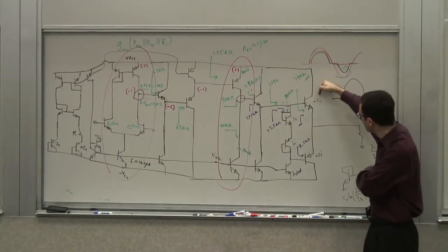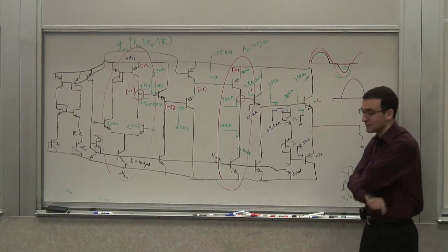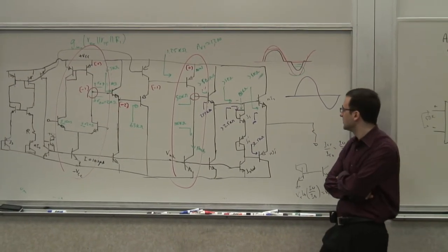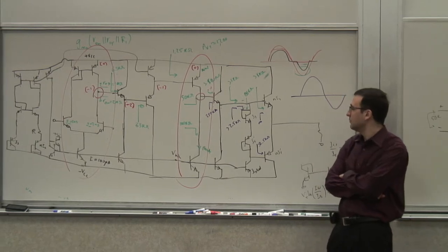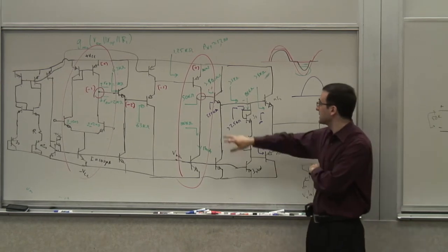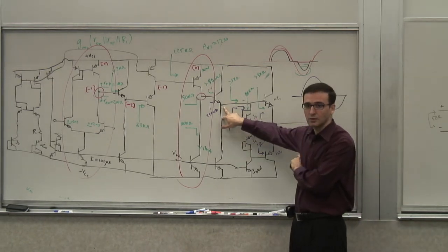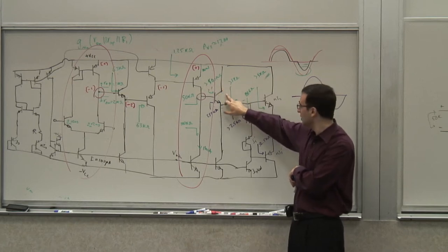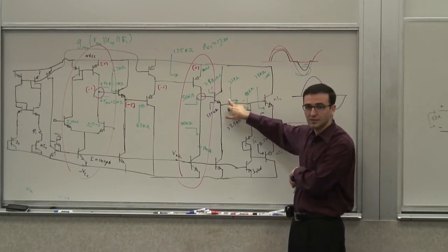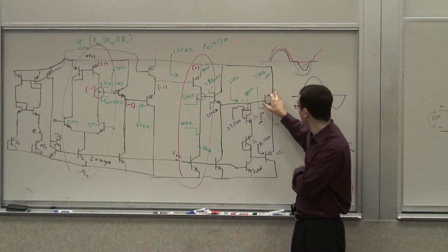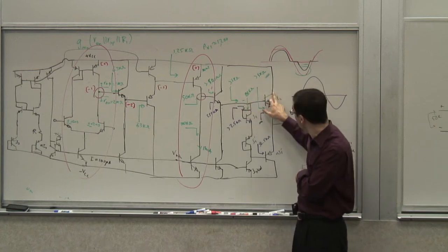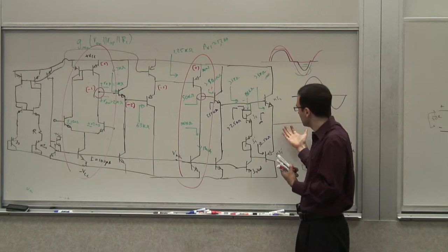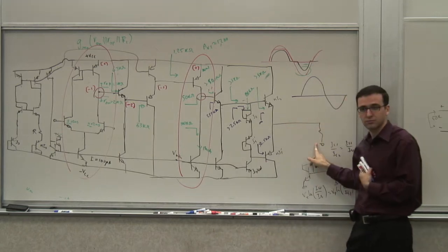What determines the current going through this transistor and that transistor? The base current with this guy also — this is another follower, right? So this can provide a lot of current from here. You have a lot of base current available at your disposal, and therefore you can draw even a lot more current through here. What determines that current is this voltage and this resistor.